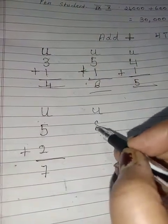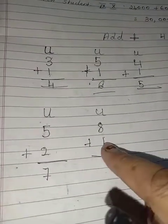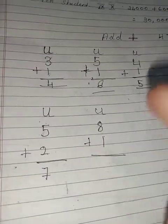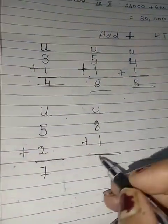Now units 8 and 1 plus. To kitna ungli le hai, 1. 1 rakho aur upor number ta dako. After 8, 9. 9.